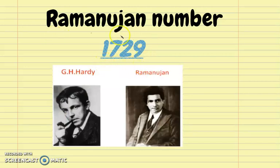Hi, my name is Anush and today I am going to talk about Ramanujan's number, which is 1729. It was discovered by these two mathematicians, G.H. Hardy and Ramanujan.